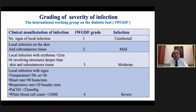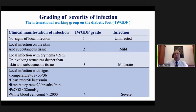A grading system based on international guidelines helps assess infection type and severity. Grade 1 — no signs of local infection — means uninfected. Grade 2 — local infection on skin and subcutaneous tissue involved — infection rated as mild. Grade 3 — local infection with erythema more than 2 cm or deeper structures involved — rated moderate. Grade 4 — generalized spread such as bacteremia or septicemia — severe infection.